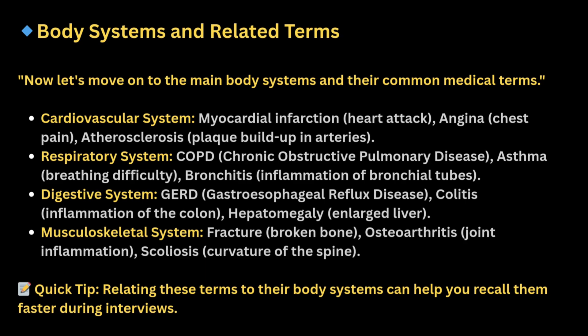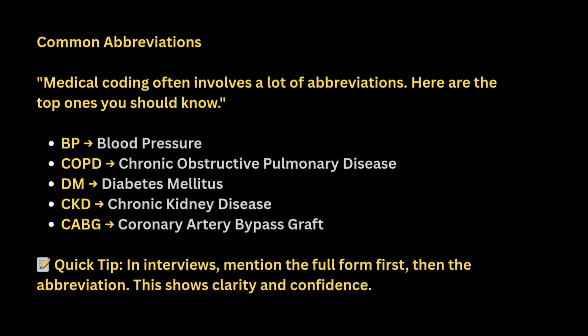Second, let's move on to body systems and related terms. Cardiovascular system: myocardial infarction, angina, atherosclerosis. Respiratory system: COPD, asthma, bronchitis. Digestive system: GERD, colitis, hepatomegaly. Musculoskeletal: fracture, osteoarthritis, scoliosis.